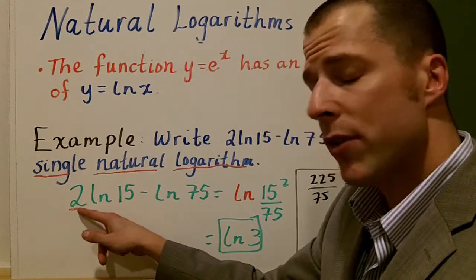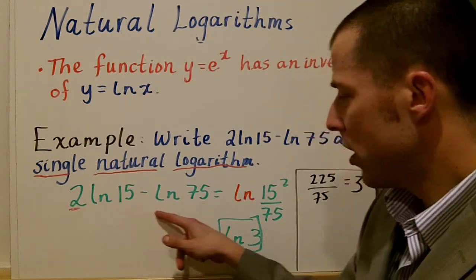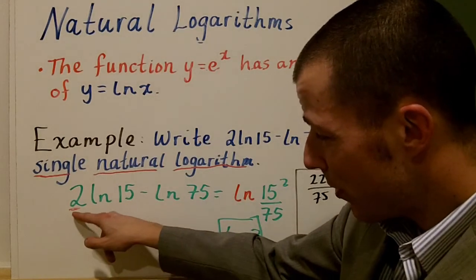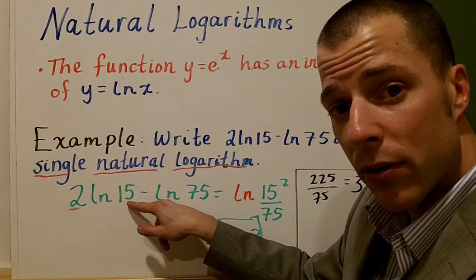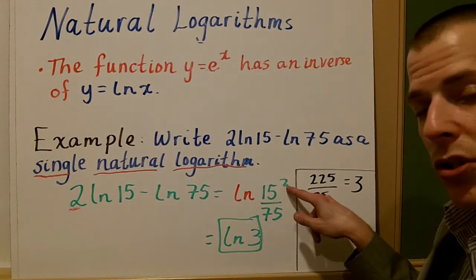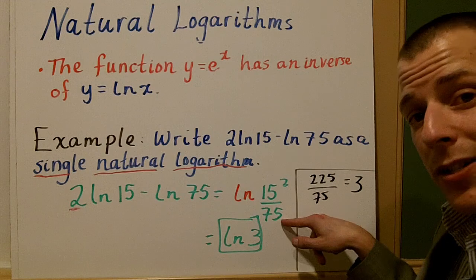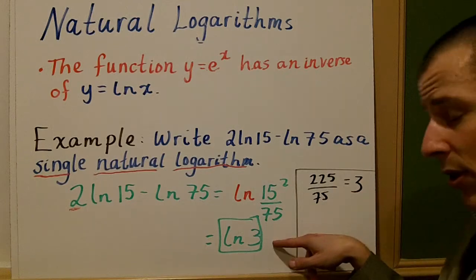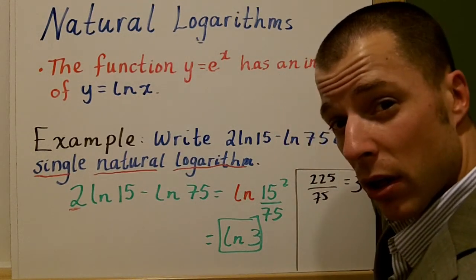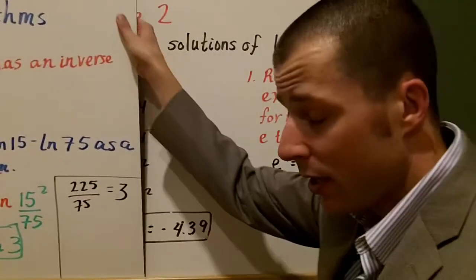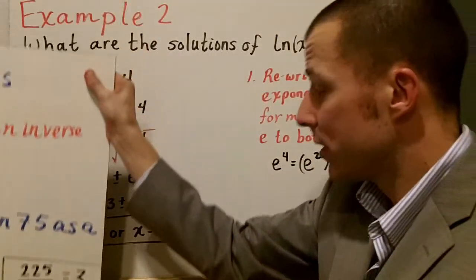We notice we have the 2 on the outside here with the 15, so when we start rewriting this single logarithm, that 2 is going to be on the power, on 15 as a power of 2. That's why we get natural log of 15 squared over 75. Now, since this is a single logarithm, we know that 225, which is 15 squared, over 75 is equal to 3, so we actually have the natural log of 3. That's using some properties, and now we're going to start solving some equations.